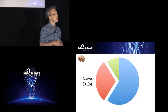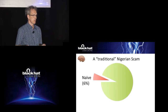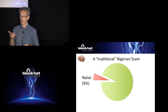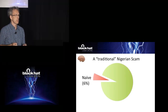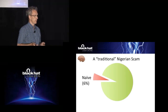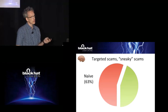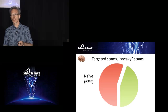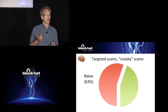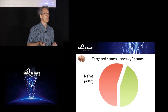Now let's do the same for other attacks. This is a traditional Nigerian scam — 'I'm a Nigerian princess, I want to share my wealth with you.' What portion of people think that seems plausible? About 6% — that echoes very well what we know about traditional Nigerian attacks. Now come interesting things: targeted scams and sneaky scams. The naive rate jumps up to 63%. For targeted attacks, it could mean somebody breached a database and knows, for example, that you're an Amazon Prime shopper who bought a pair of sneakers.